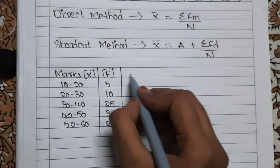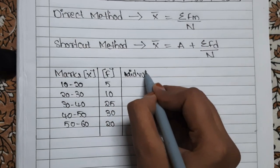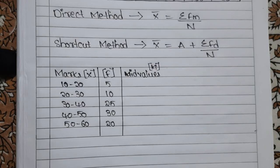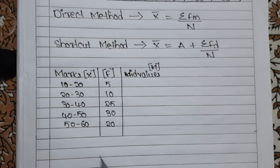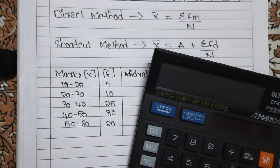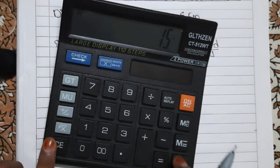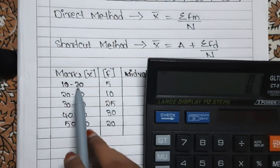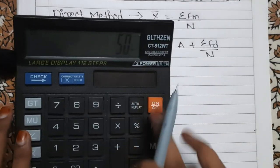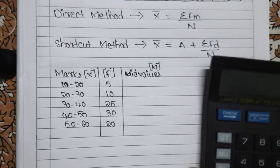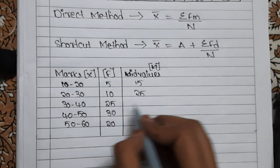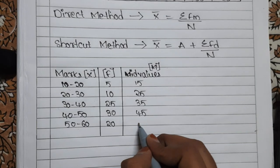After taking X and F, now we have to find mid values, which are denoted as M. How do you find mid values? You have to see what value comes in between. You add both class limits and divide by 2. So 10 to 20: 10 plus 20 equals 30, divided by 2 equals 15. Similarly: 20 to 30 gives 25, 30 to 40 gives 35, 40 to 50 gives 45, and 50 to 60 gives 55. Sometimes the class intervals may not be simple, so you can use a calculator to find mid values.